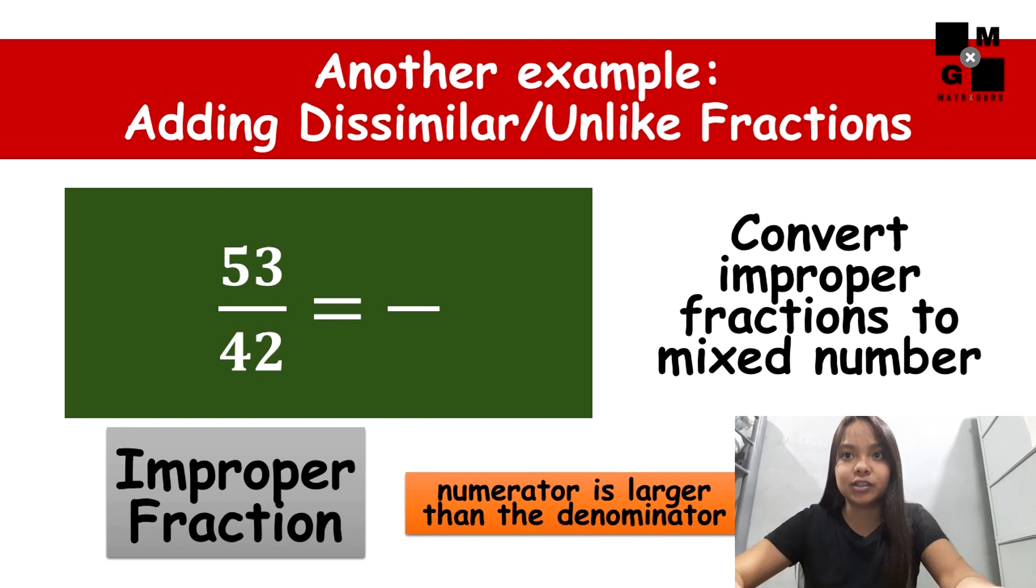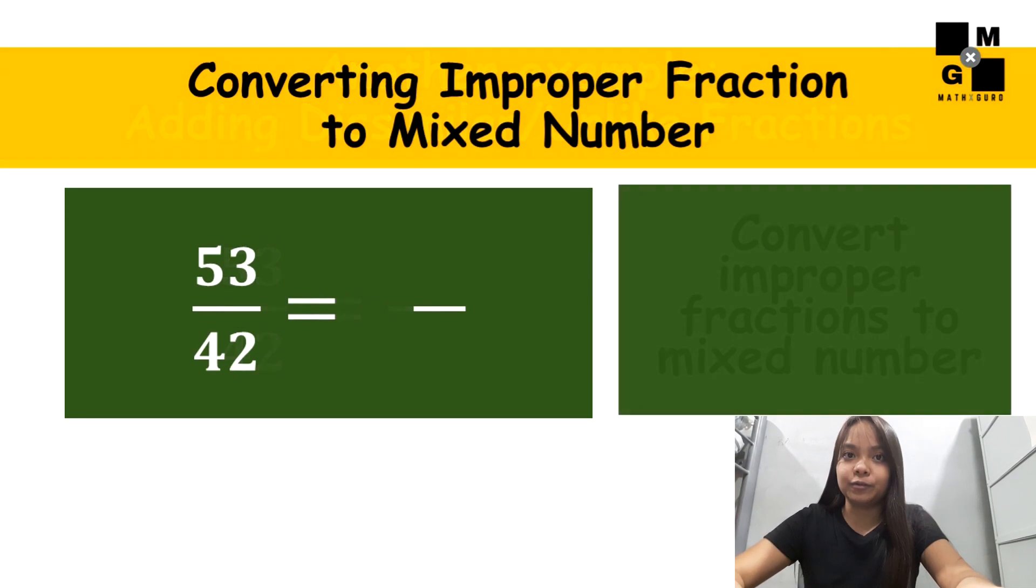How to convert improper fractions to mixed number? To convert improper fractions to mixed number, we must divide the numerator by the denominator. First, we will have fifty-three divided by forty-two. Fifty-three divided by forty-two is one. And then one times forty-two is forty-two. Subtract forty-two from fifty-three. Then you will get the remainder of eleven.